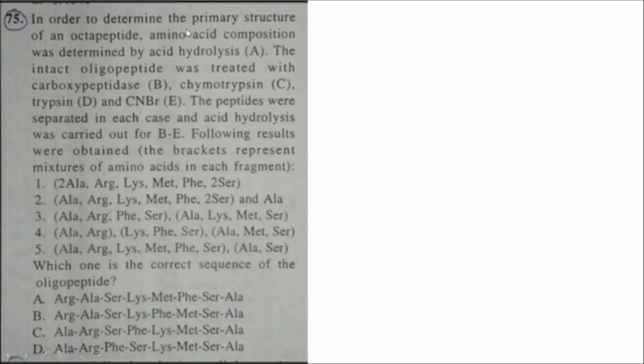In these questions, it says we have used 5 different enzymes to treat the proteins. And here it is mentioned that there are octa peptides — 'octa' means 8 — so in total we have 8 amino acids. Even if this were not mentioned, after looking at the first enzyme, which is acid hydrolysis, we can determine the total number.